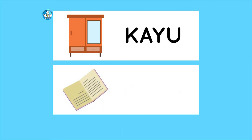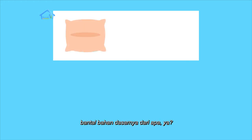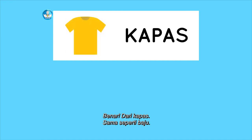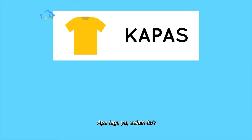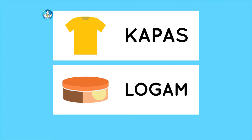Buku dari kertas. Oh iya, tadi ada yang bilang bantal. Wah, bantal bahan dasarnya dari apa ya? Benar, dari kapas, sama seperti baju. Karena itu, bantal sangat nyaman dipakai waktu tidur. Apalagi ya, selain itu. Kaleng kue. Benar sekali. Kaleng kue bahan dasarnya logam.